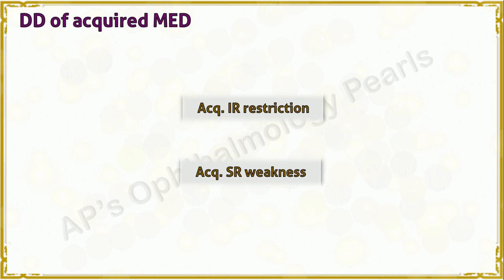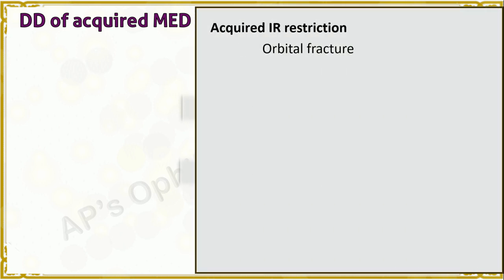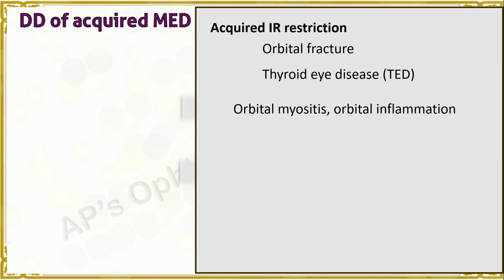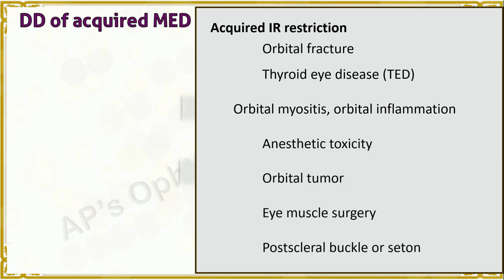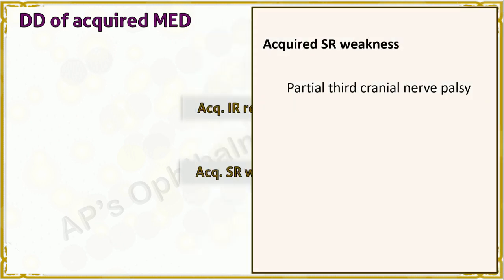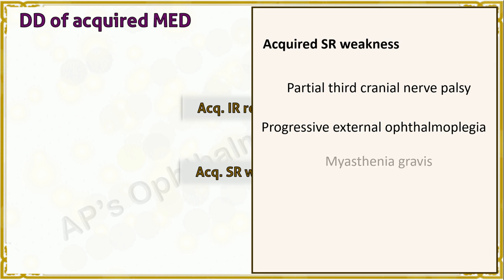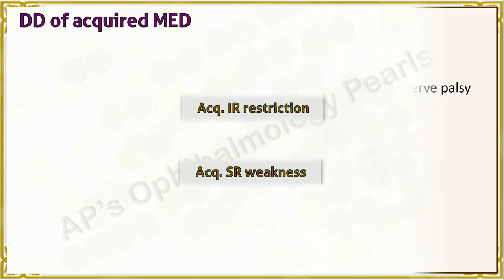Many conditions can simulate an acquired monocular elevation deficiency — either acquired causes of inferior rectus restriction or acquired causes of superior rectus weakness. Inferior rectus restriction may be seen in orbital floor fracture (confirmed by history of trauma and CT imaging), thyroid orbitopathy (characteristic bilateral involvement with proptosis and clinical features of thyroid disease), and orbital inflammatory disease or orbital cellulitis presenting with a tender inflamed globe. Causes of acquired superior rectus weakness include a partial third nerve palsy, progressive external ophthalmoplegia (involving multiple muscles, bilateral), myasthenia gravis (symptoms worse later in the day, confirmed by edrophonium test, anticholinesterase antibodies, and electromyography), and labyrinthine disorders or cerebellar tumors.